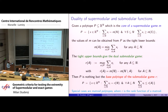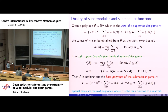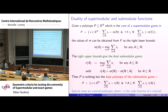The duality of supermodular and submodular functions is expressed through the core: the core of a supermodular game is a generalized permutahedron. Values of the function can be read from that polytope as lower bounds, and taking tight upper bounds gives the dual submodular game. Upper and lower bounds are related accordingly, which in the imprecise probabilities context gives lower probability (supermodular) and upper probability (submodular).